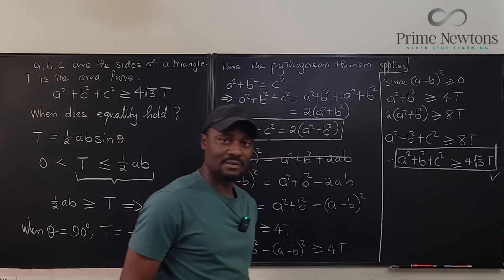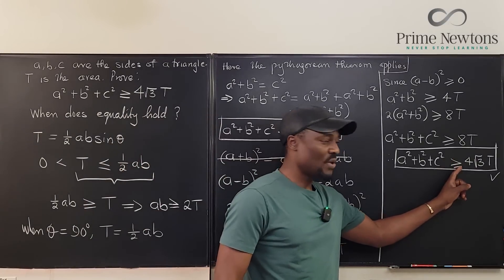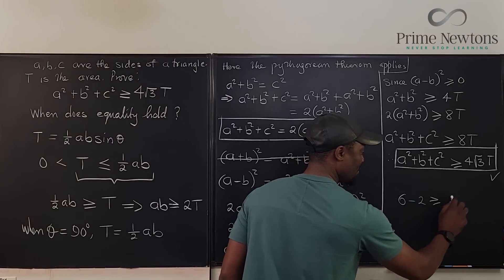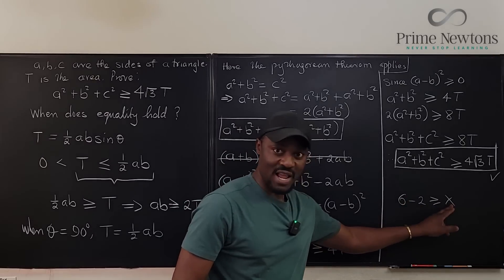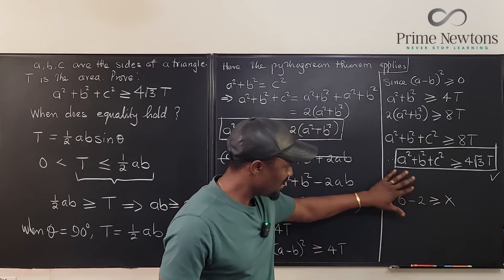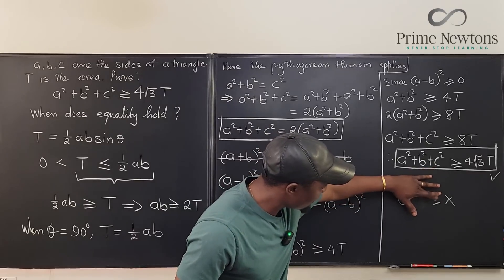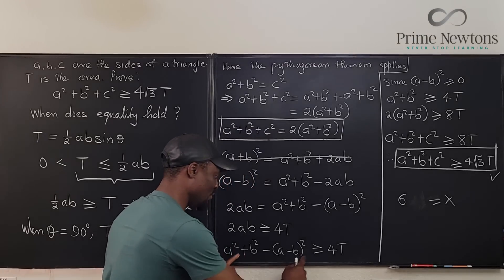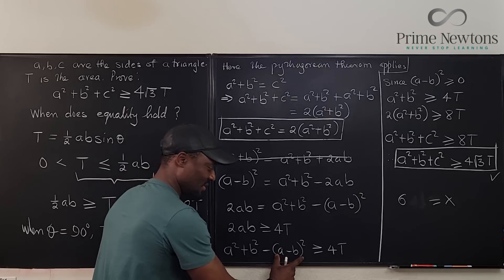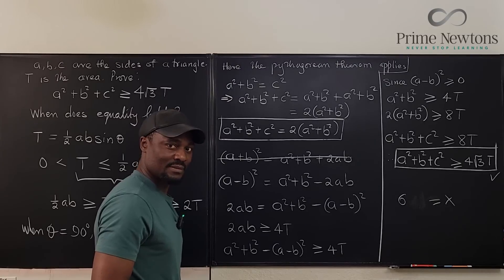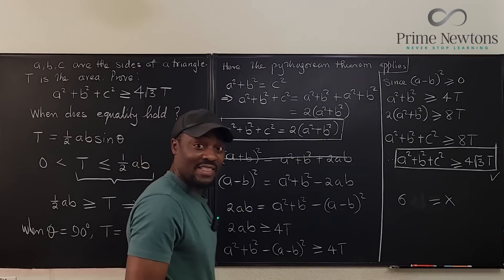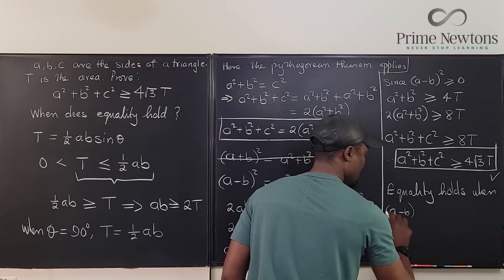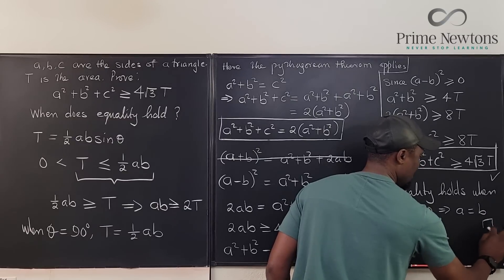We've done the first part. The second part asks: when will they be equal? Using the analogy, the two sides are equal only when you're not subtracting anything — meaning A minus B squared equals zero, which only happens when A is equal to B. So the equality holds when A equals B. That's the second part of this problem.